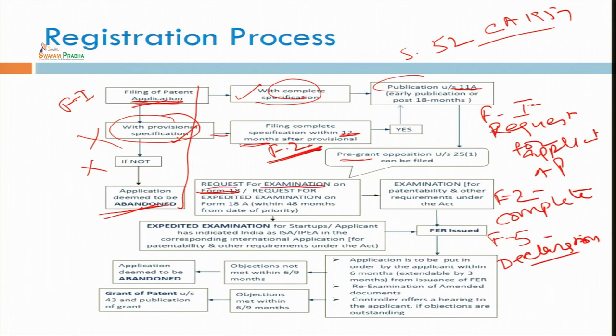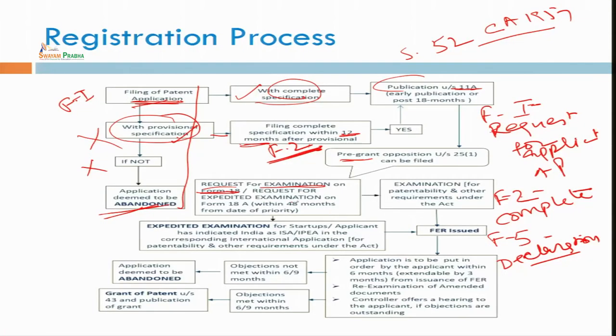Unless and until you do not give the request for examination via Form 18, the file will not move forward. Similarly, unless and until you do not give the complete specification, your application will be rejected. It is the duty of the inventor to be vigilant about what is happening in the patent office. You can also see the proceedings of your application online on the IP India website. The request for examination via Form 18 must be done within 48 months from the date of priority — that is why we keep saying 'date of priority.'